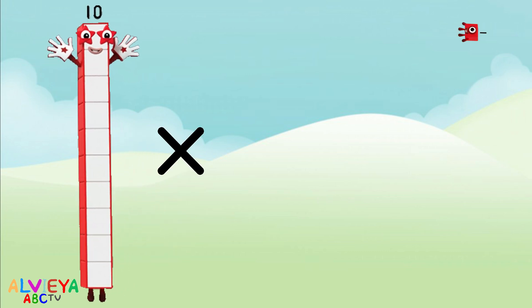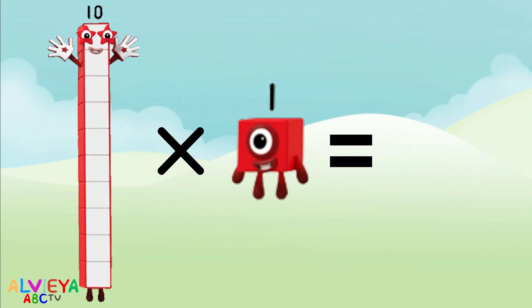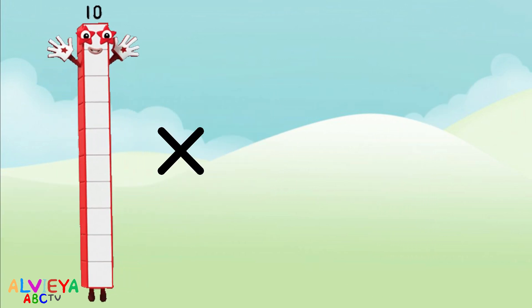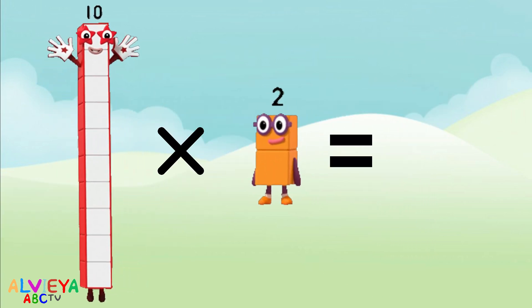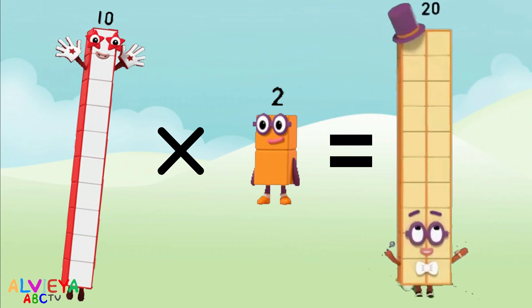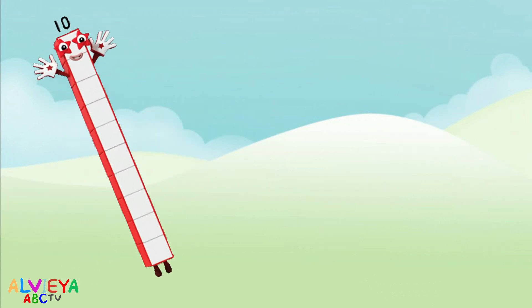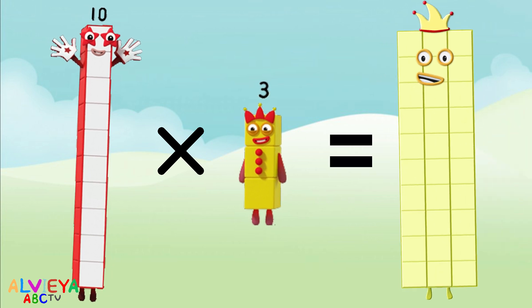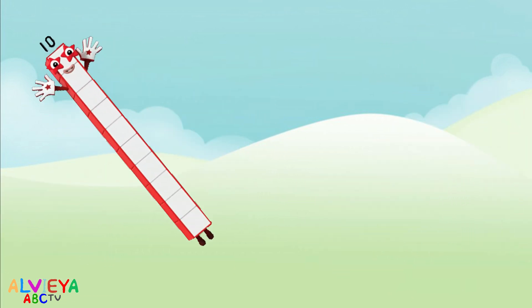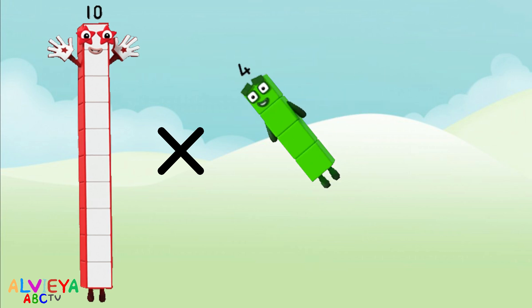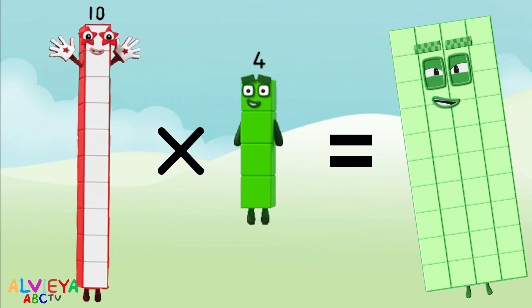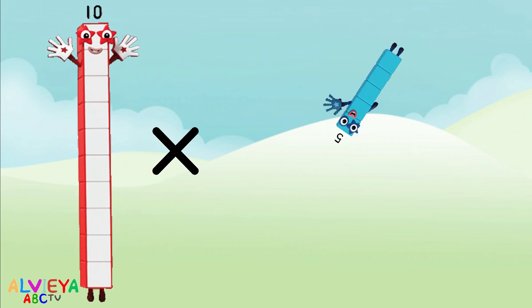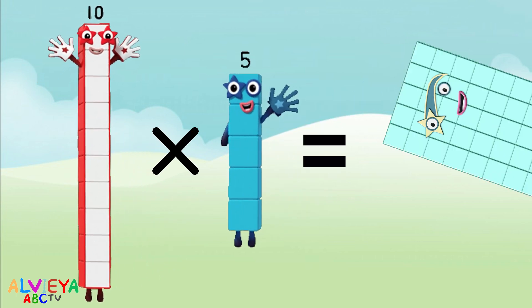Ten times one equals ten. Ten times two equals twenty. Ten times three equals thirty. Ten times four equals forty. Ten times five equals fifty.